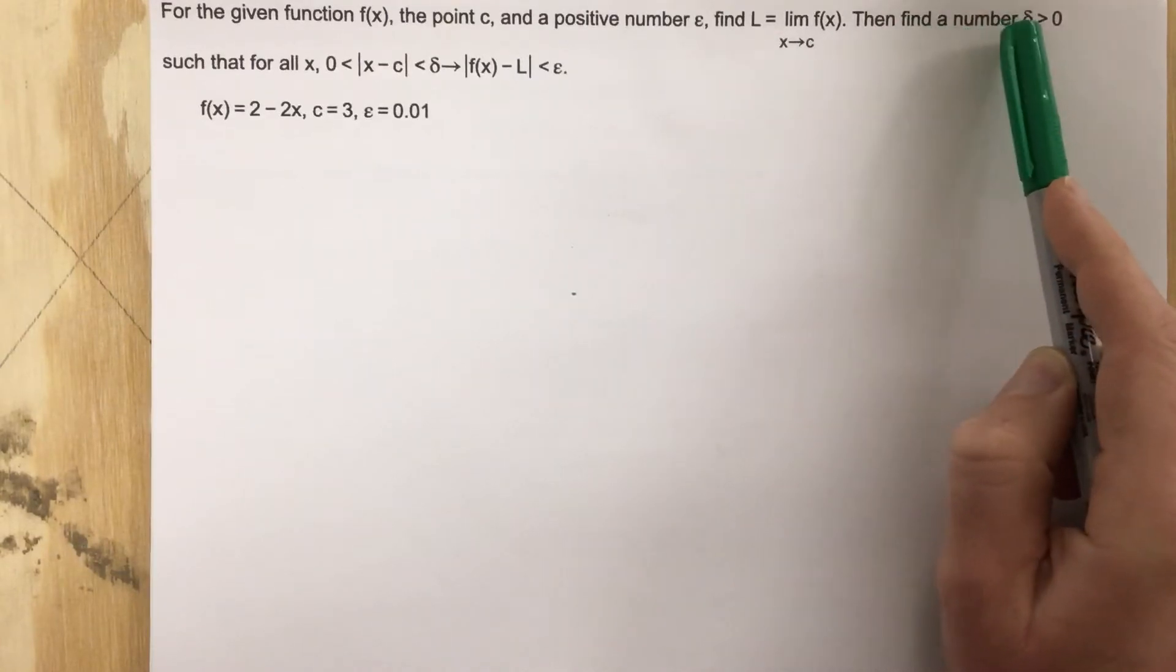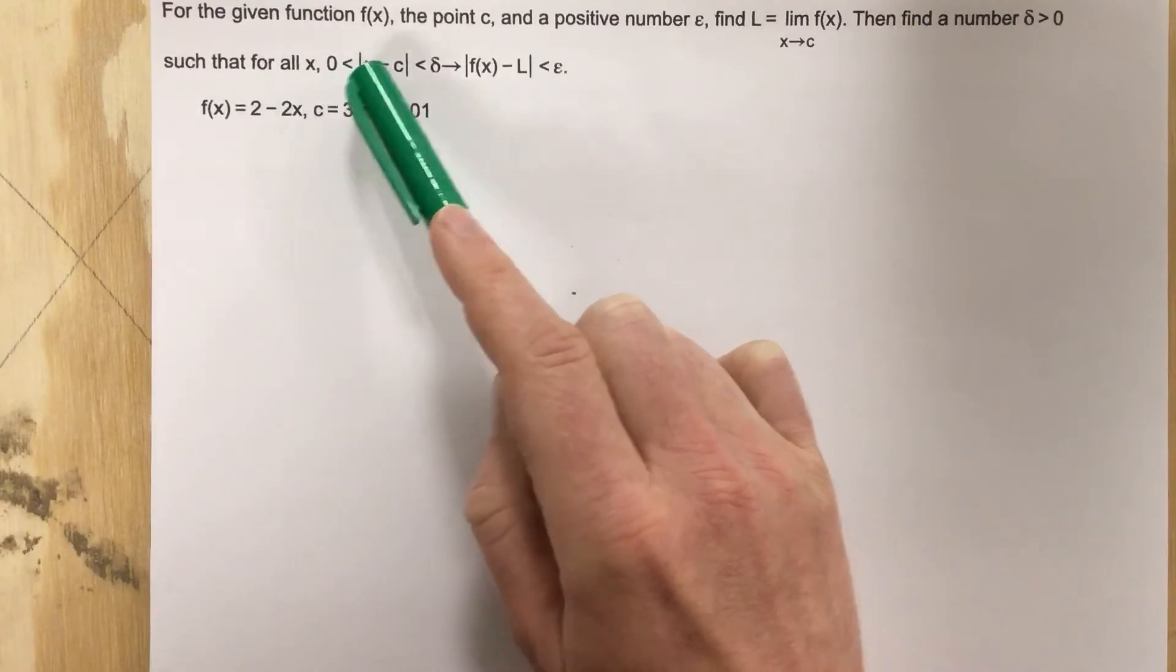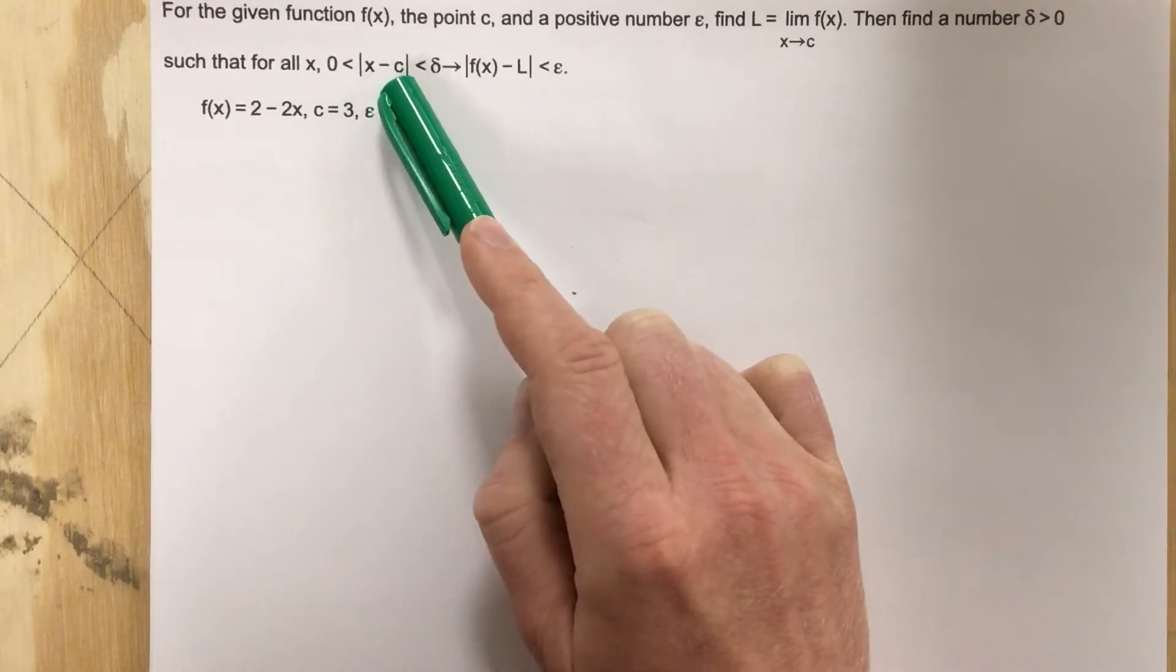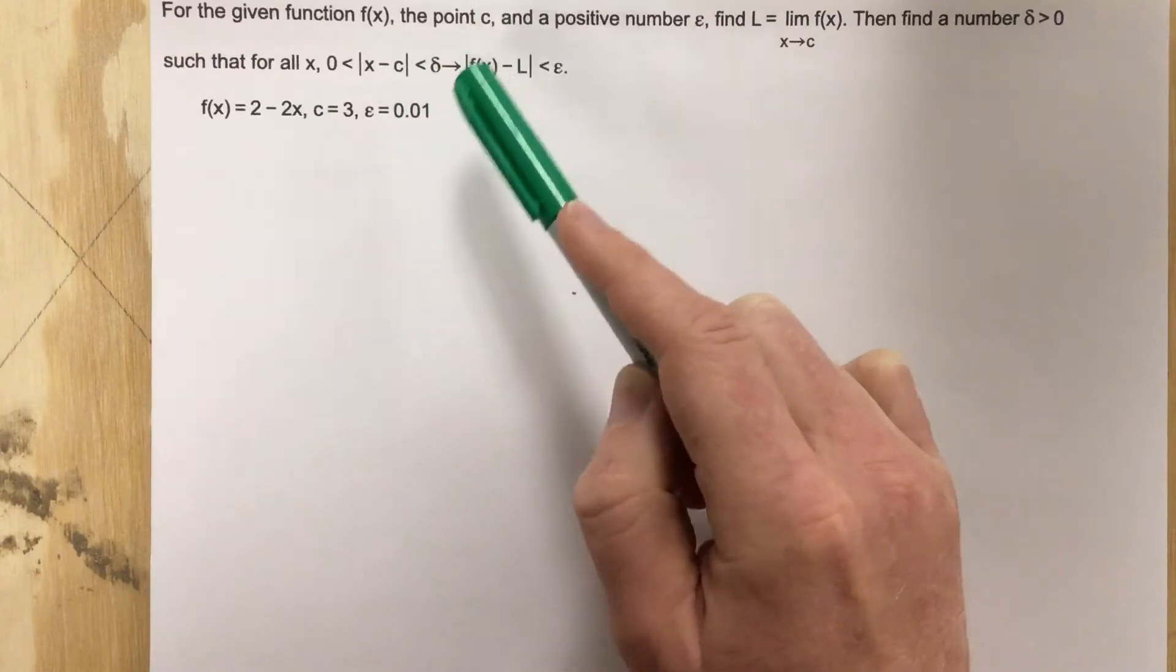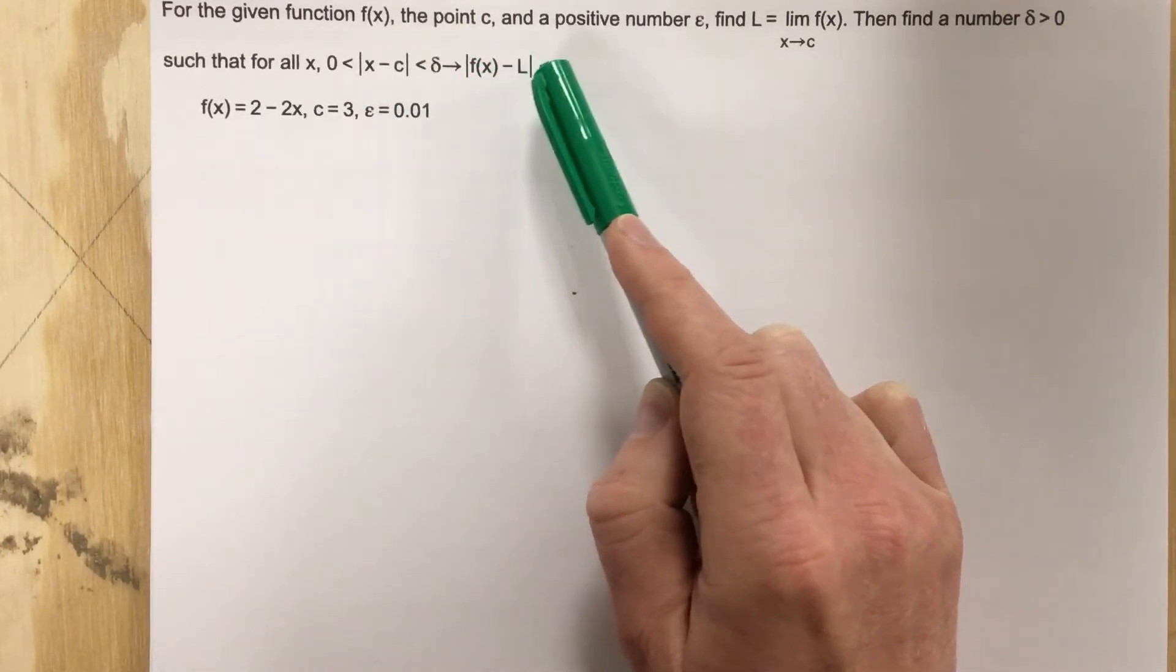find L equals the limit as x approaches c of f of x. Then find a number delta greater than 0 such that for all x, 0 is less than absolute value of x minus c is less than delta, which implies the absolute value of f of x minus the limit is less than epsilon.